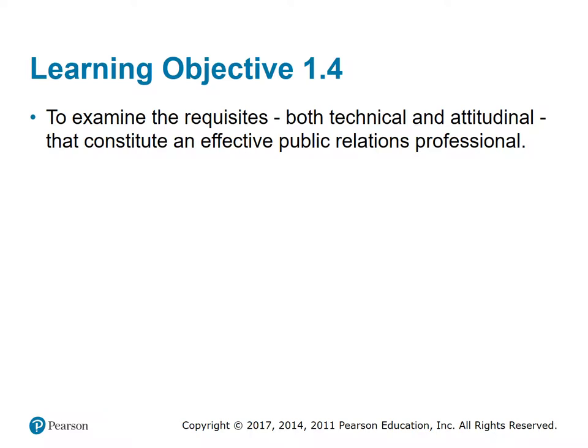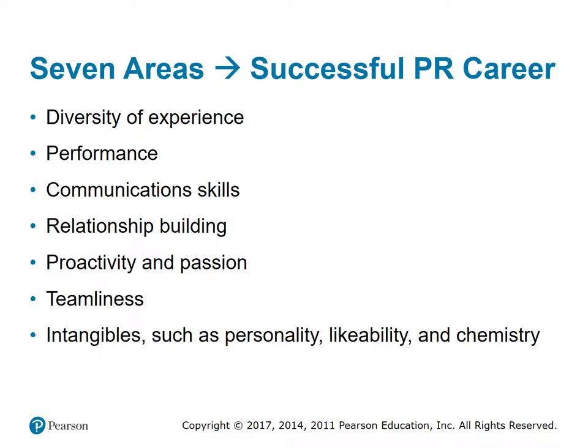Learning objective 1.4: to examine the requisites, both technical and attitudinal, that constitute an effective public relations professional. Seven areas of a successful PR career include: diversity of experience, performance, communication skills, relationship building, proactivity and passion, teamliness, and intangibles such as personality, likability, and chemistry. A 2004 study of agency, corporate, and nonprofit public relations leaders reported these seven areas which characterize a successful public relations career.